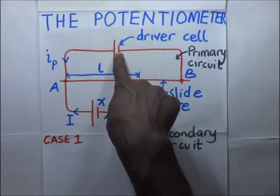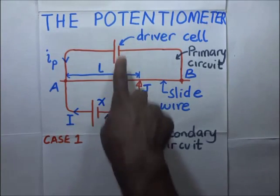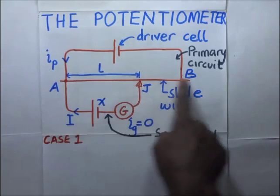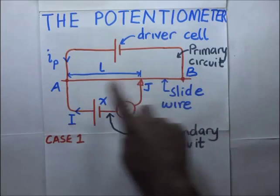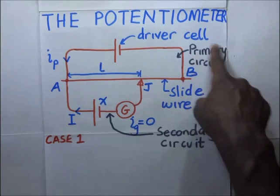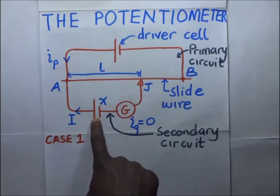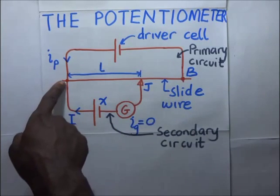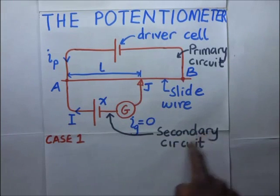Looking at this diagram, we have a potentiometer circuit with a driver cell having an EMF and an internal resistance. This driver cell is connected to a slide wire, which can be of any length. The combination of the slide wire and the driver cell circuit makes up the primary circuit of the potentiometer. The secondary circuit is made up of a galvanometer and another cell or resistor, connected from point A up to J.